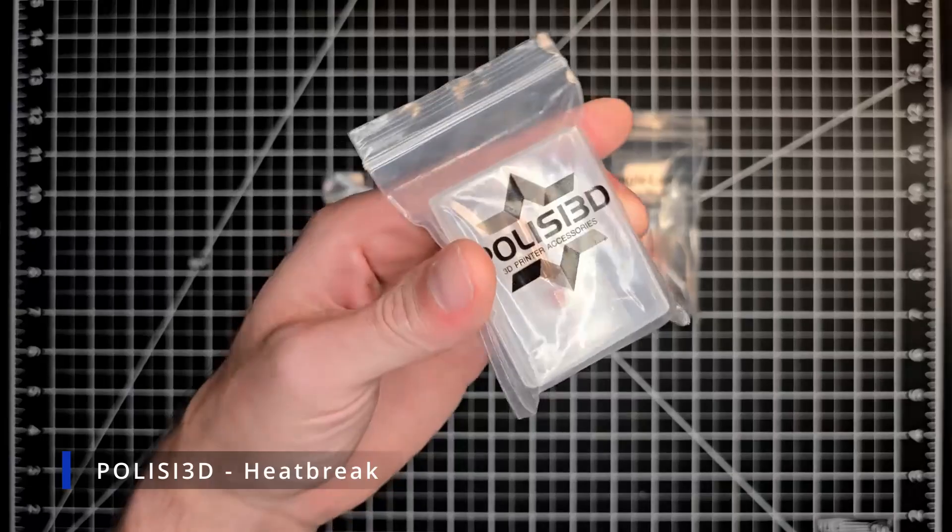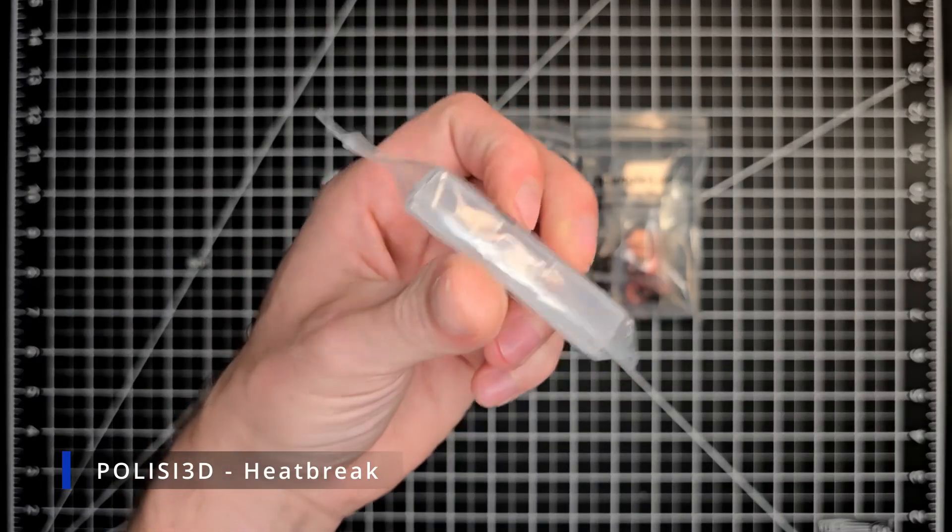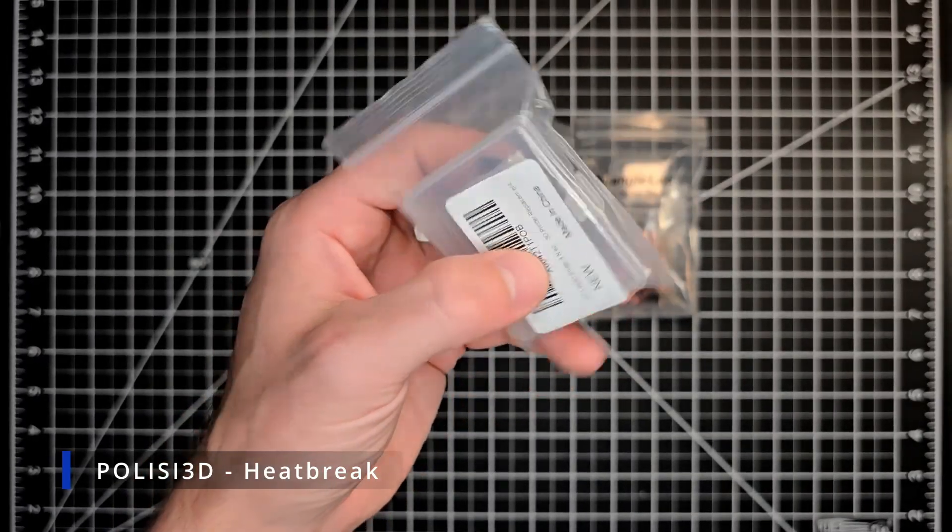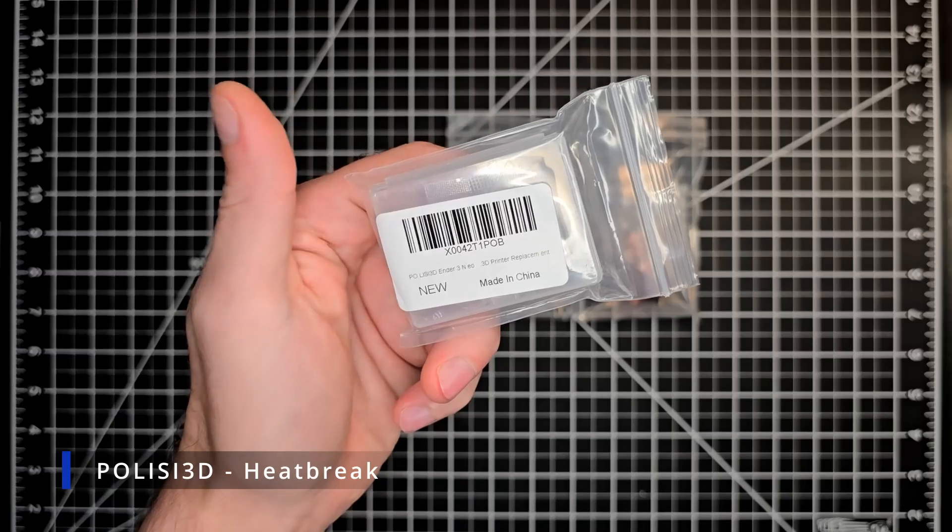Next up, we've got a Polyseed heat break as per the build and materials. This is necessary because you will be modifying the Creality K1 heatsink to receive this Dragon Ace.